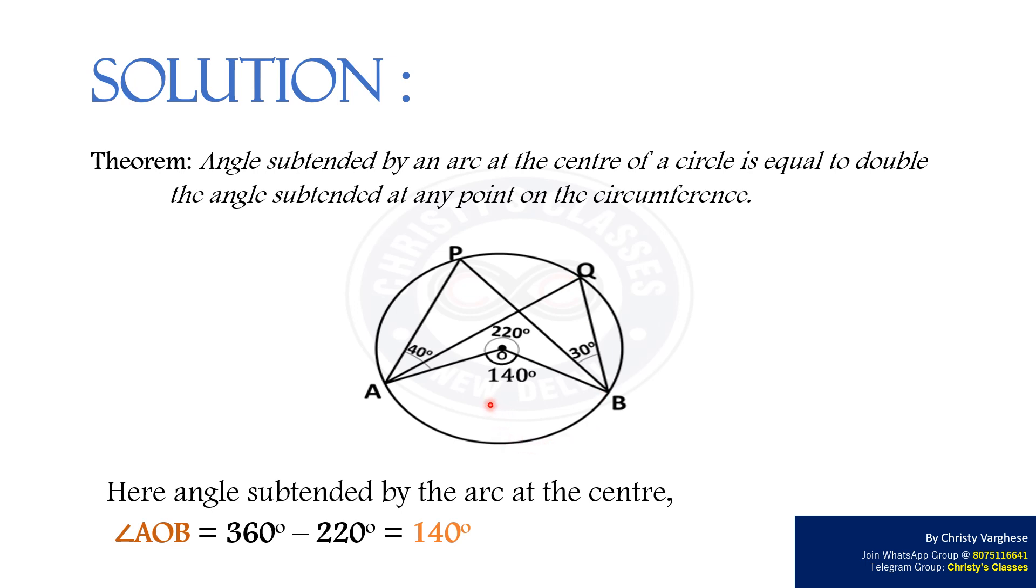Here, the angle subtended by the arc at the center is angle AOB. This equals 360 degrees minus 220 degrees, that is 140 degrees.